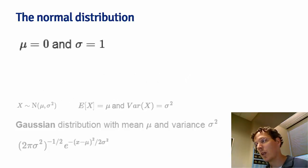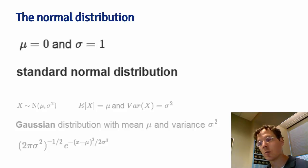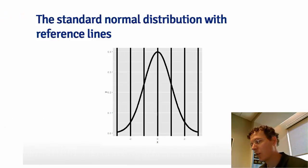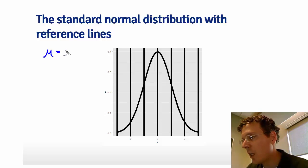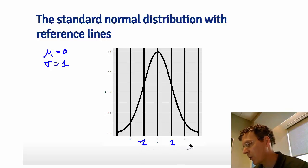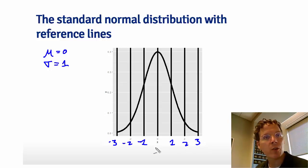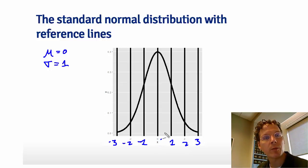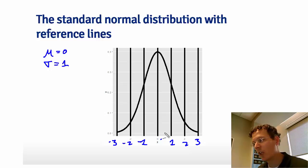When mu equals 0 and sigma equals 1, the resulting distribution is called the standard normal distribution, and standard normal random variables are often labeled z. Here I draw the standard normal density function — the famous bell curve. For the standard normal distribution, its mean is 0 and its standard deviation and variance are 1. I've drawn one, two, and three standard deviations above and below the mean. The units of the standard normal can be thought of as standard deviation units.